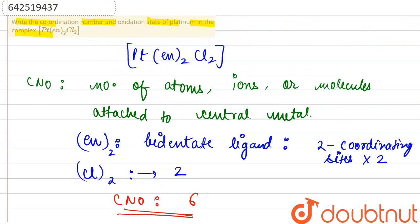So this is the coordination number and the second part that is being asked is the oxidation of platinum in the given complex. Let's pen down the complex again PT EN2 CL2. Let's say that the platinum is having oxidation state of X.